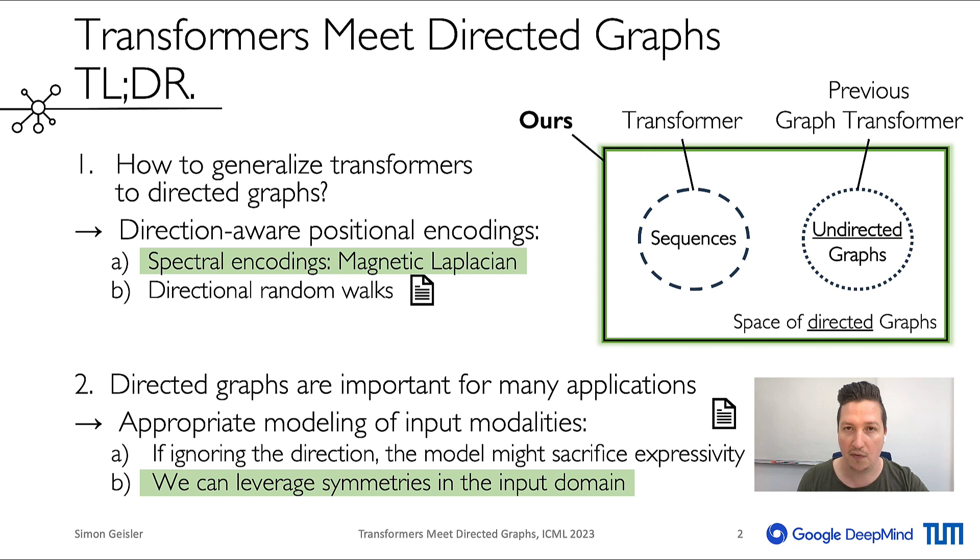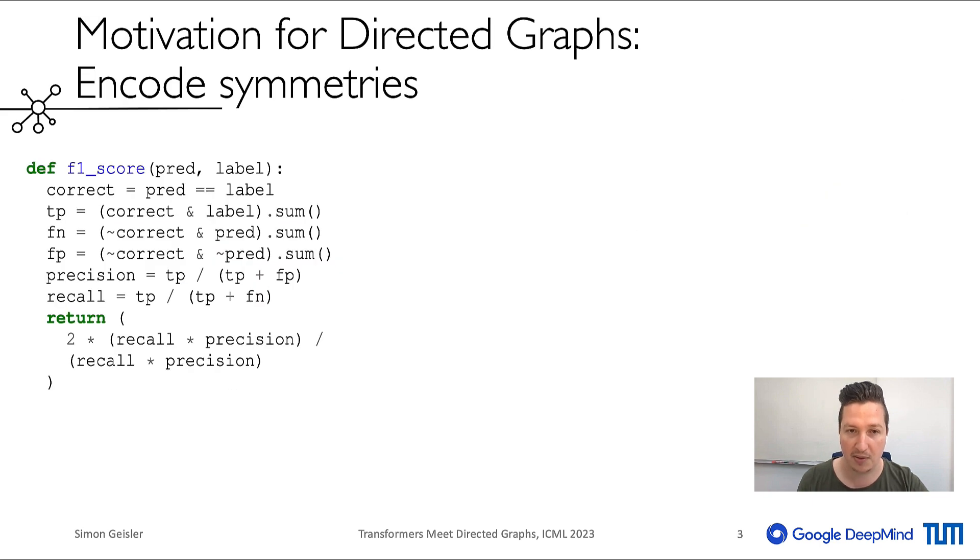After a quick overview of what I mean by modeling symmetries, I will introduce our spectral position encodings for directed graphs and refer to our paper for the other points.